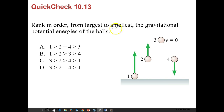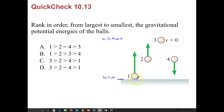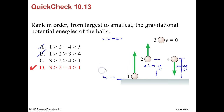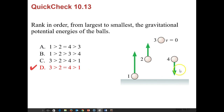Quick check 10.13: rank from largest to smallest the gravitational potential energy of the balls. Ball 1 is at ground height (h = 0), ball 3 is at maximum height. Balls 2 and 4 are at the same intermediate height. So ball 3 has the most, balls 2 and 4 are equal, and ball 1 has the least. The answer is D.